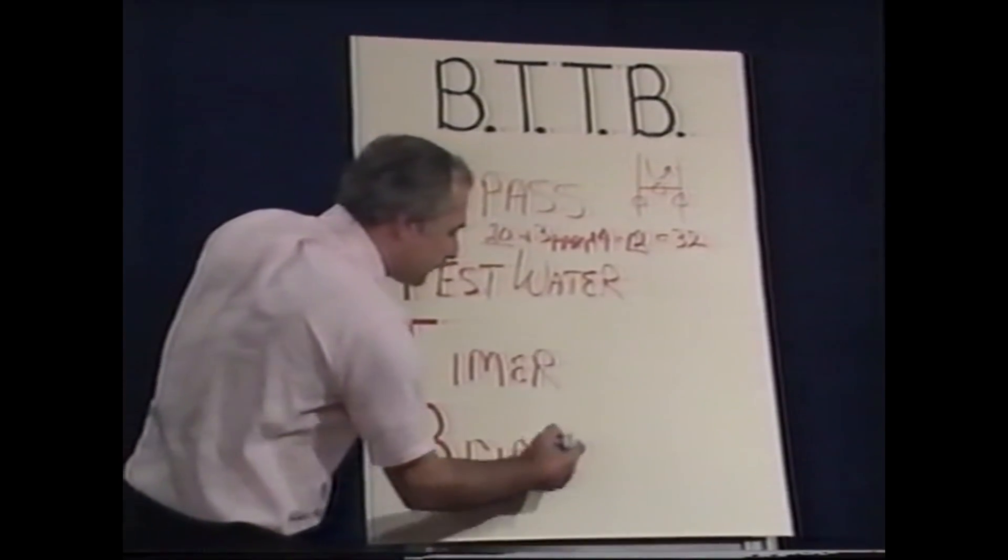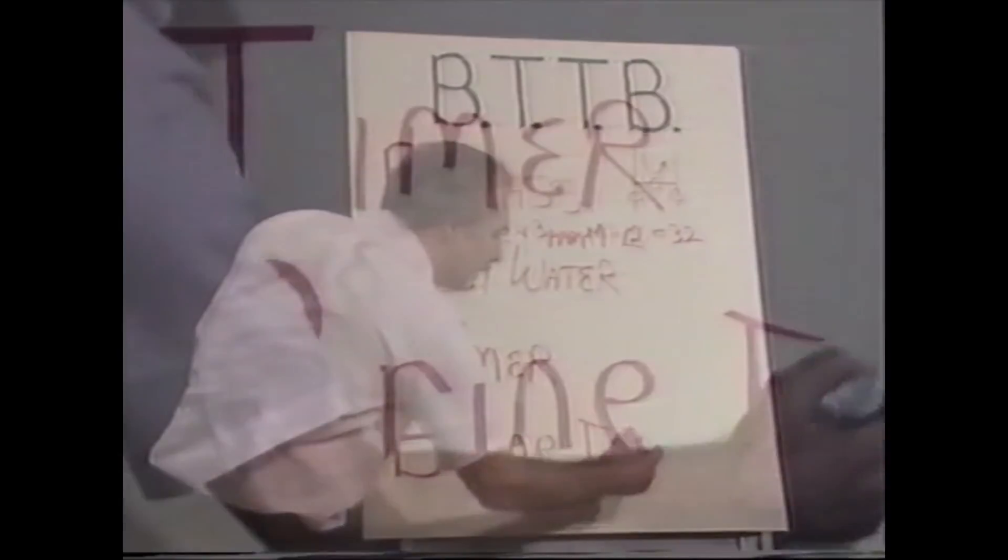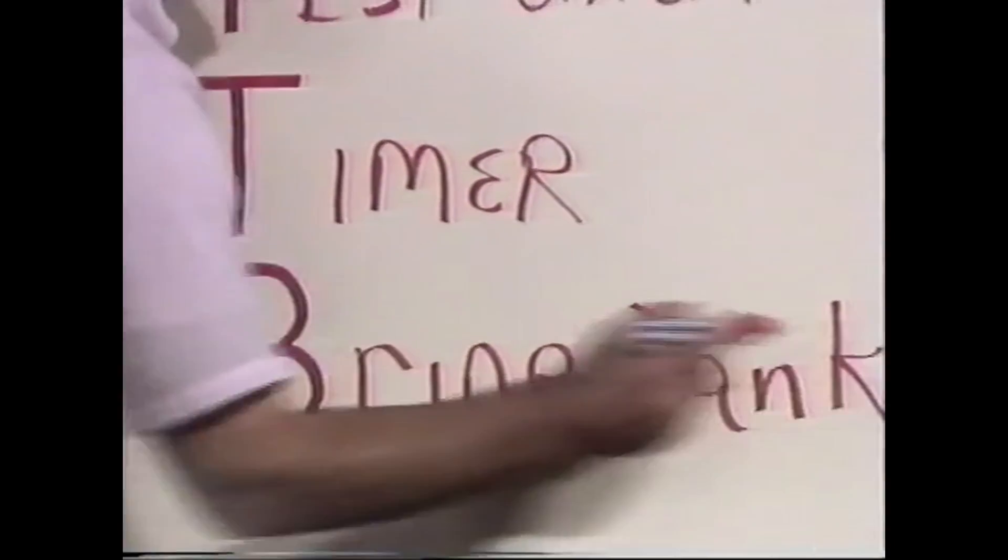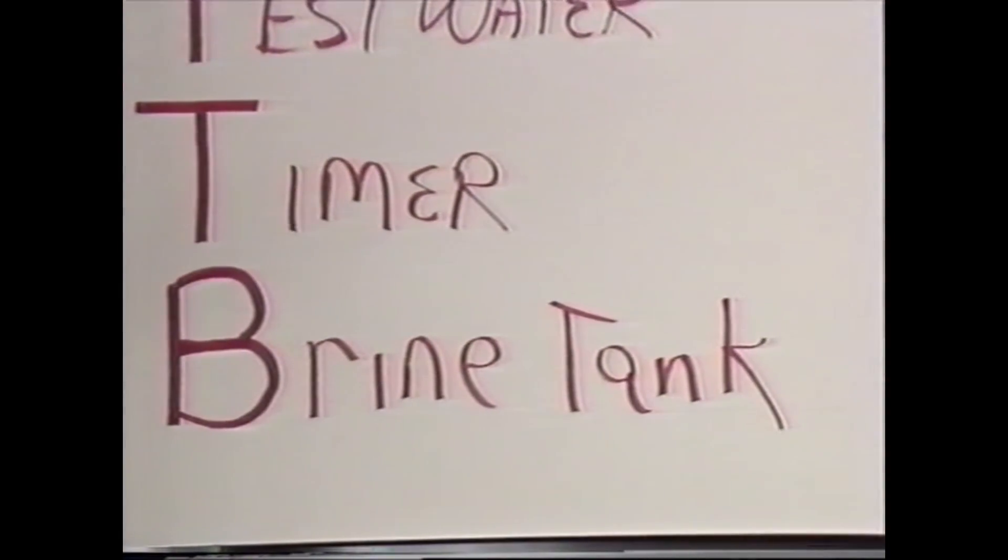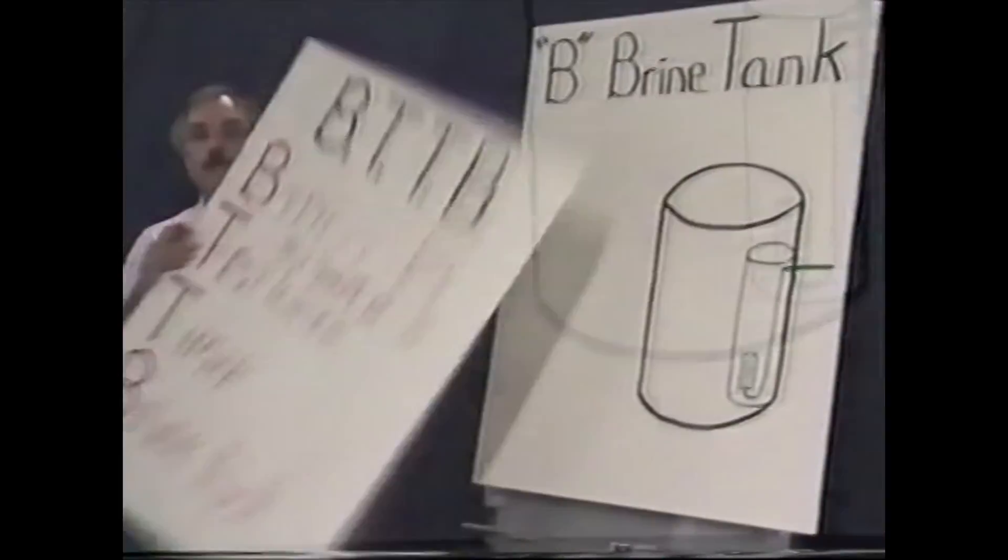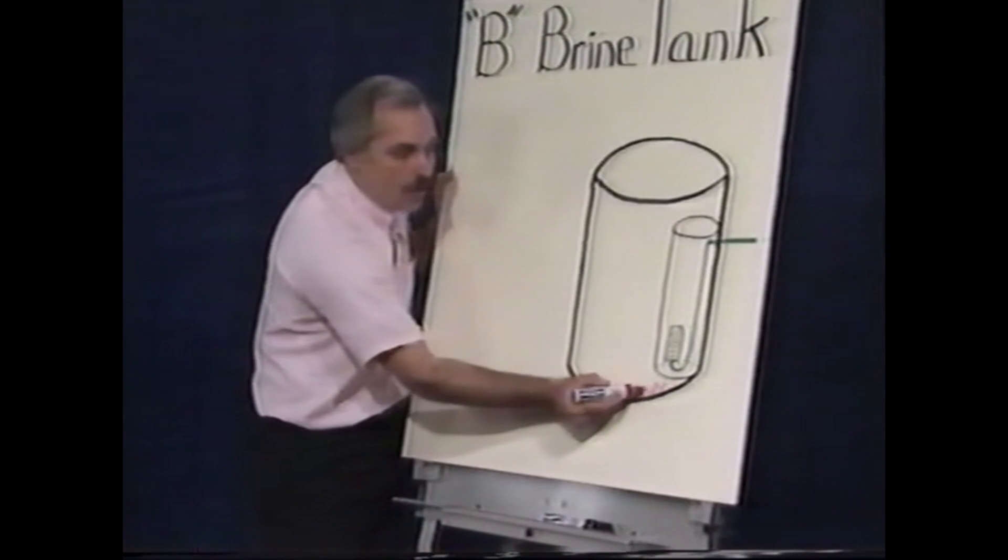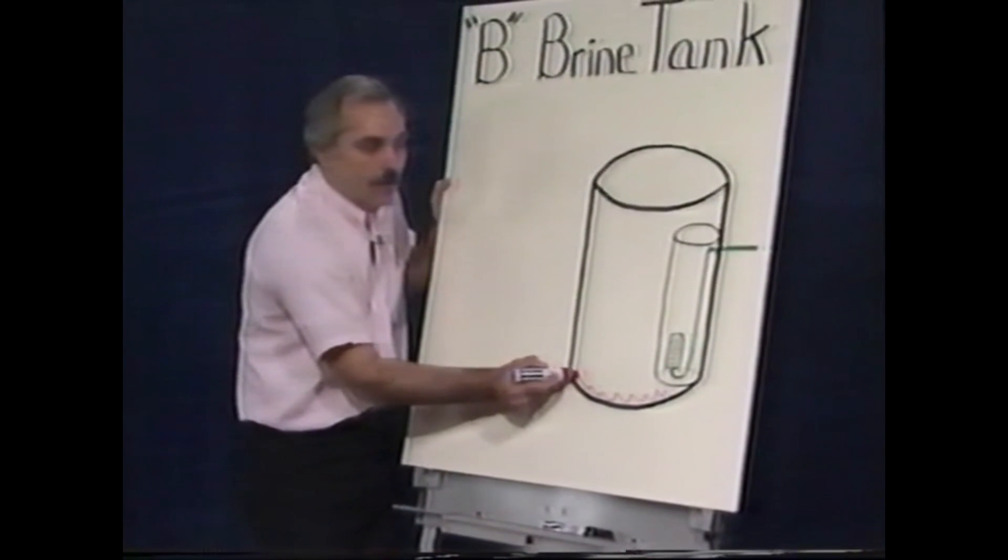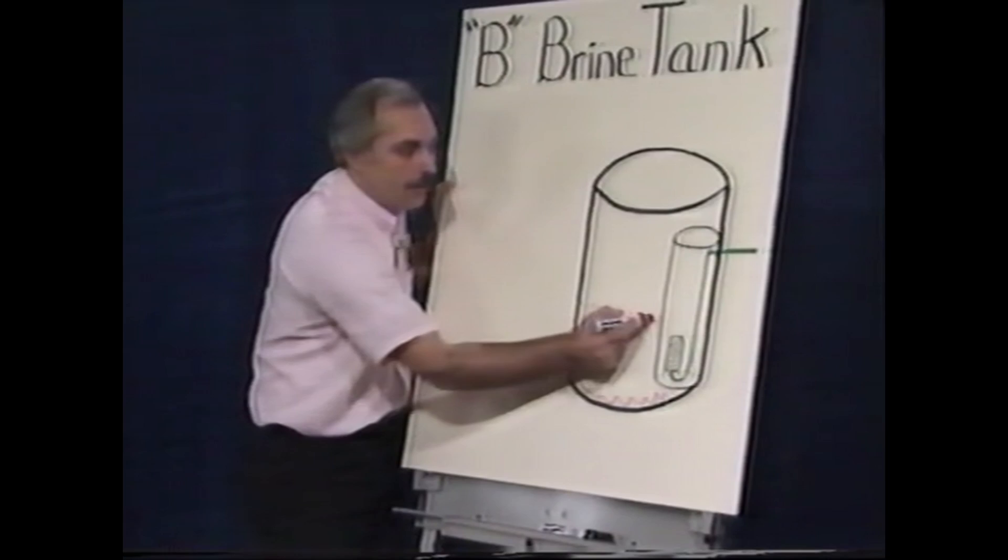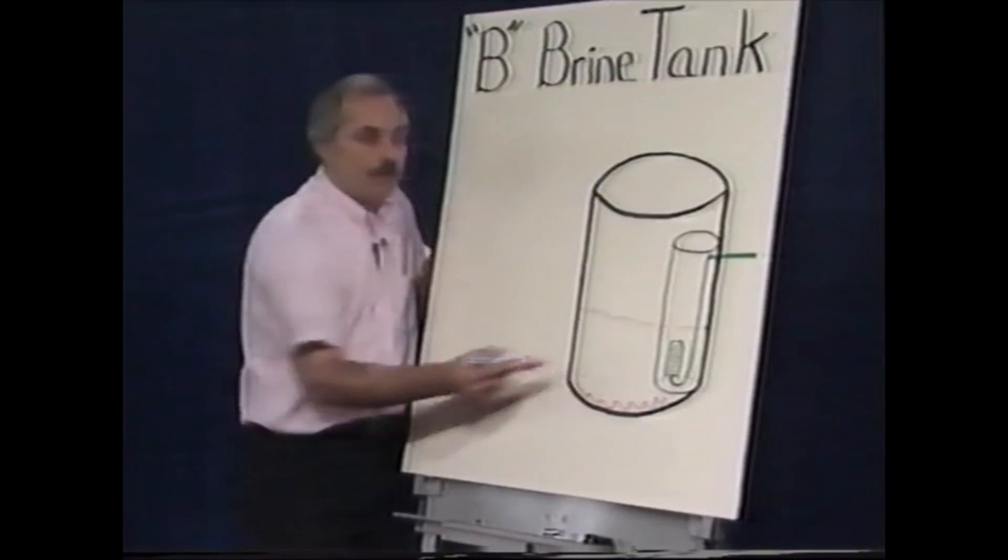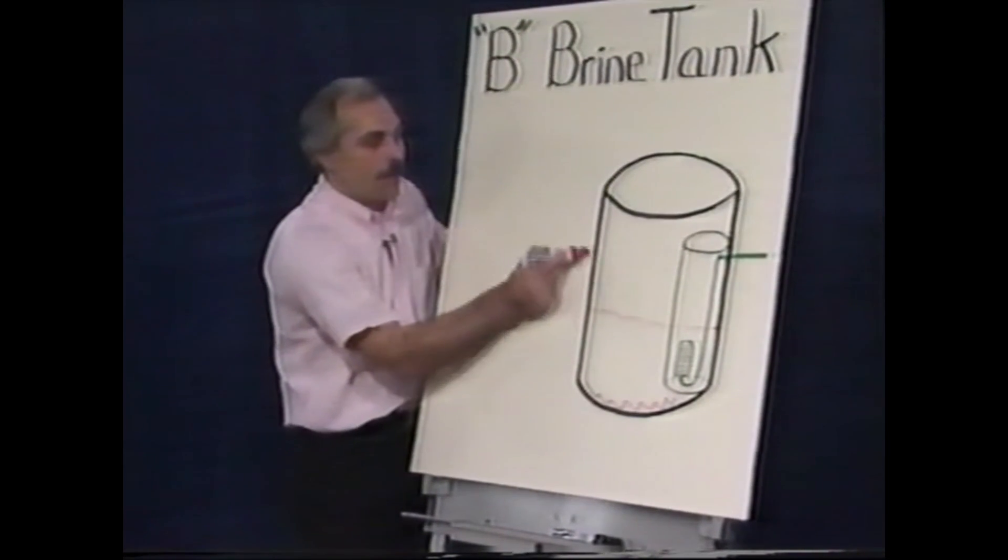When checking the brine tank for the obvious - having salt - many times people will pull the lid off the top of the tank and see a dusting of salt down at the bottom. The water level is up here, and if you siphon water right off the top, you might end up with a 30 to 40 percent concentration.